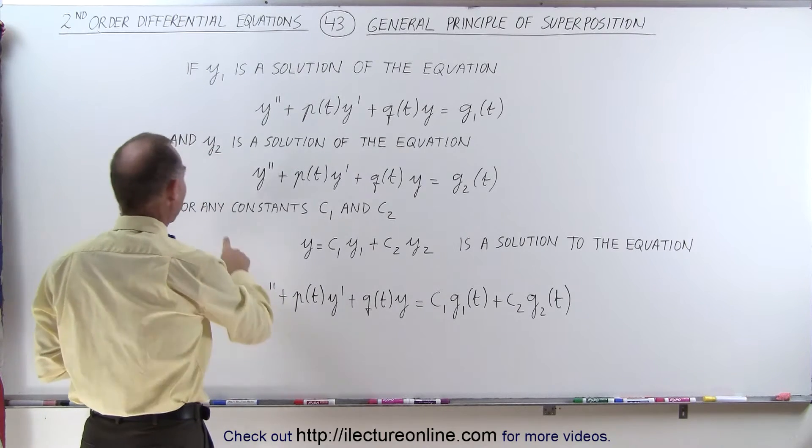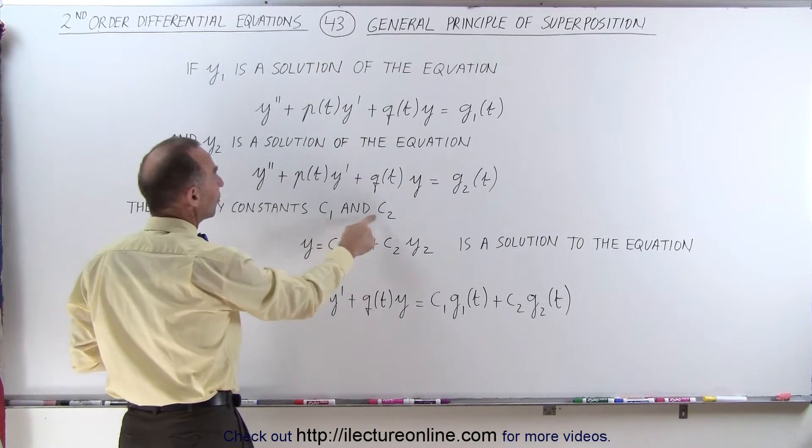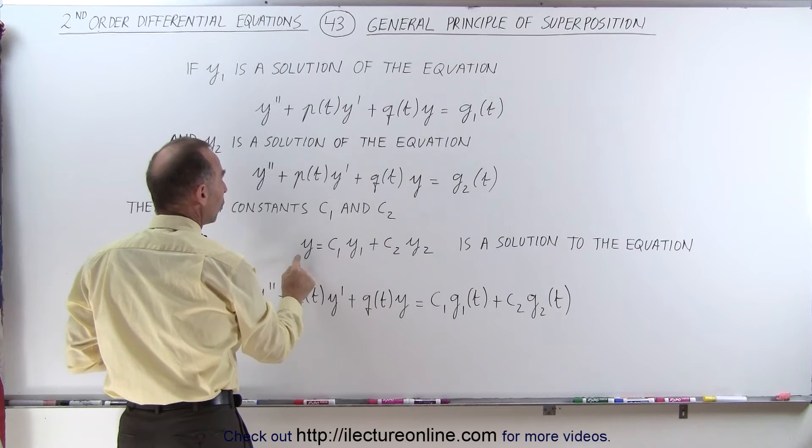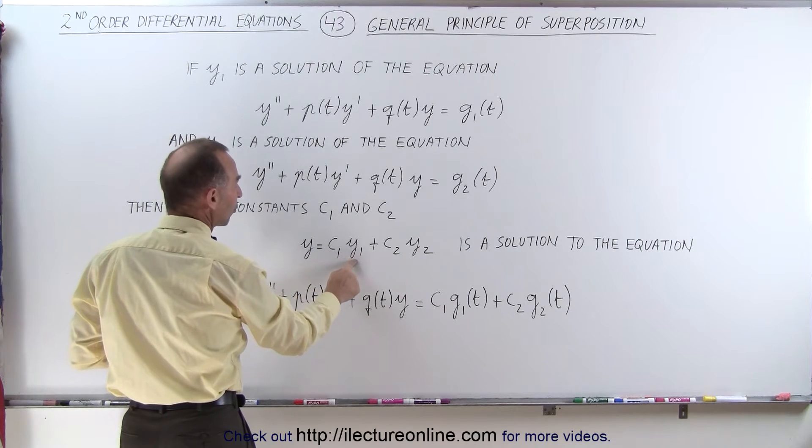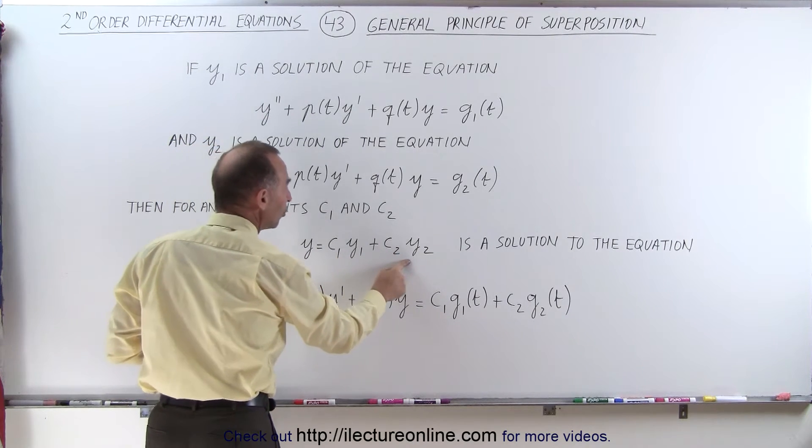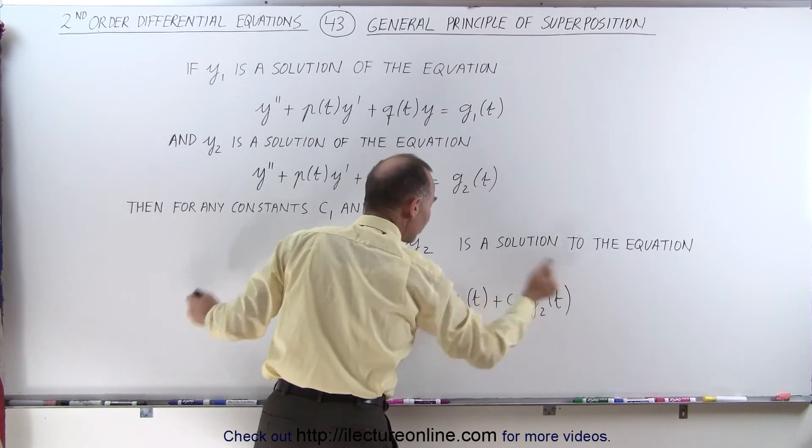then we can say that for any two constants, c1 and c2, that y is the solution, c1 times y1 plus c2 times y2 of the equation down here.